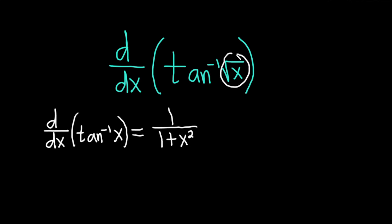We have this square root of x that's basically the inside function. So we're going to use the chain rule. The chain rule says that you take the derivative of the outside function, which in this case is the inverse tangent, leave it evaluated at the inside, and then multiply by the derivative of the inside.